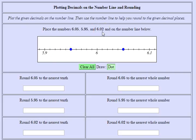And then we have 6.02 or 6 and 2 hundredths. So starting at 6 I'm going to go 1, 2 more.